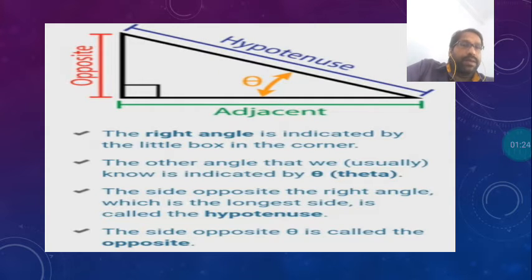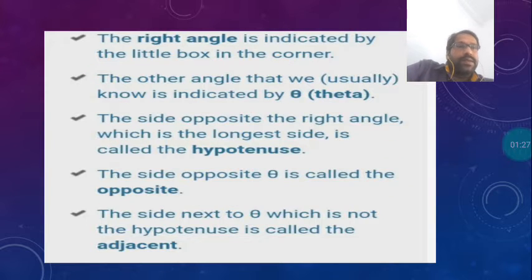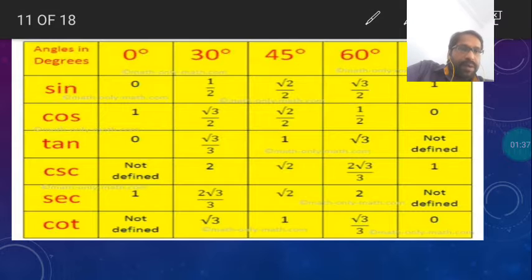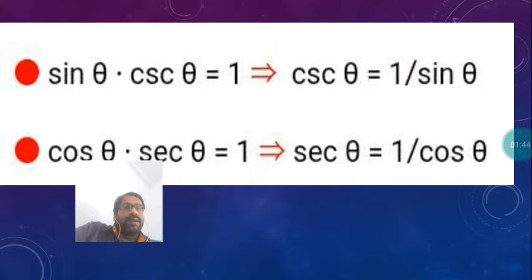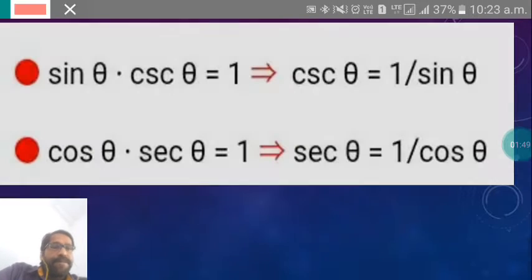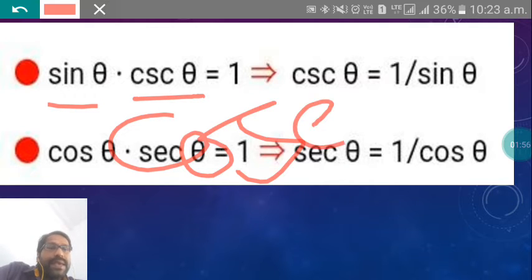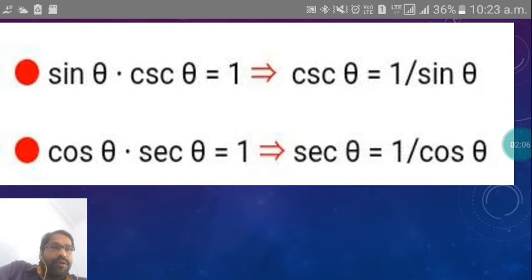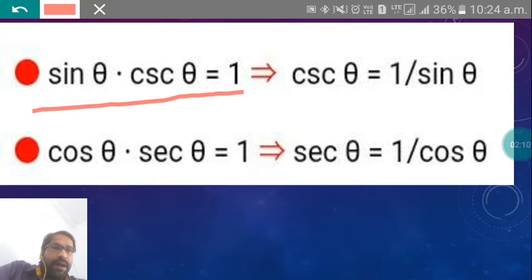These ratios are very important and you have to learn them all. We have learned these things in previous classes. Now what we are going to learn is also very important. These angles you have to remember — we have discussed and completed these. So our first identity: sine theta and cosec theta — cosec theta is equal to 1 over sine theta.